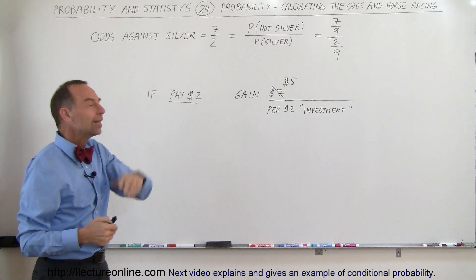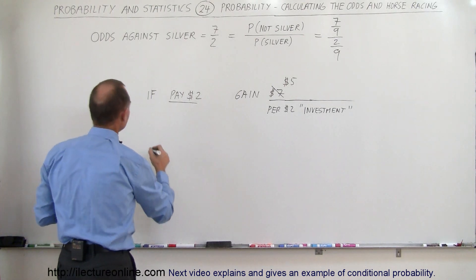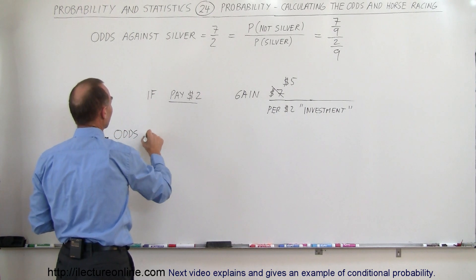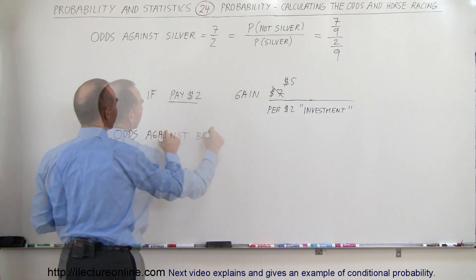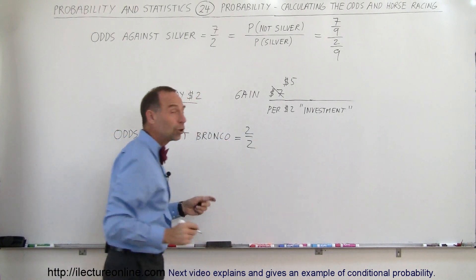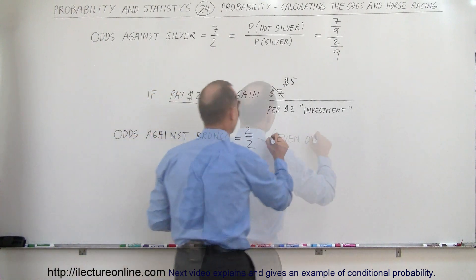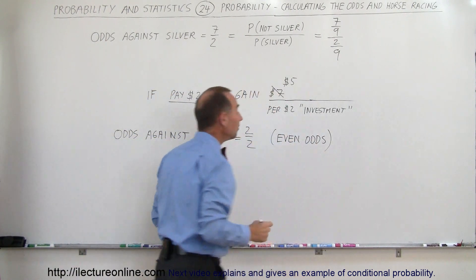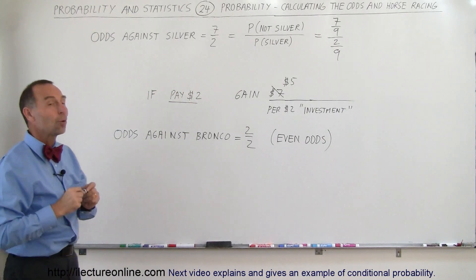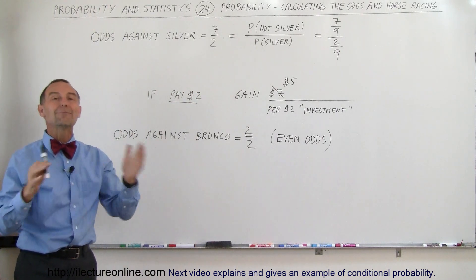Usually the horse that is rated the highest, let's say that the odds against Bronco, let's say the odds are 2 to 2, well, we call that even odds, which means that if you buy a $2 ticket on Bronco and Bronco wins, they give you $2 back and you didn't make a penny.